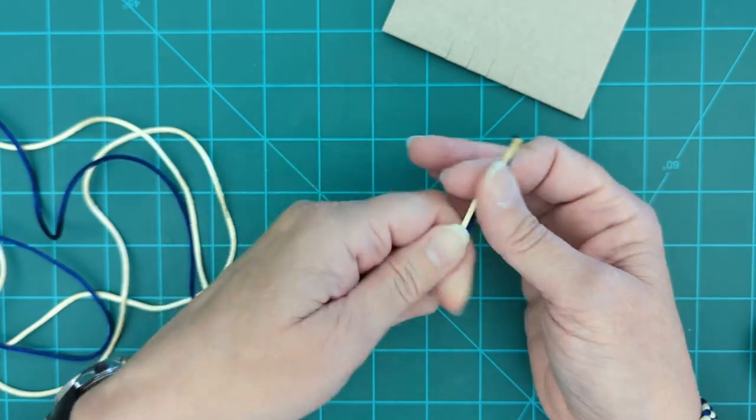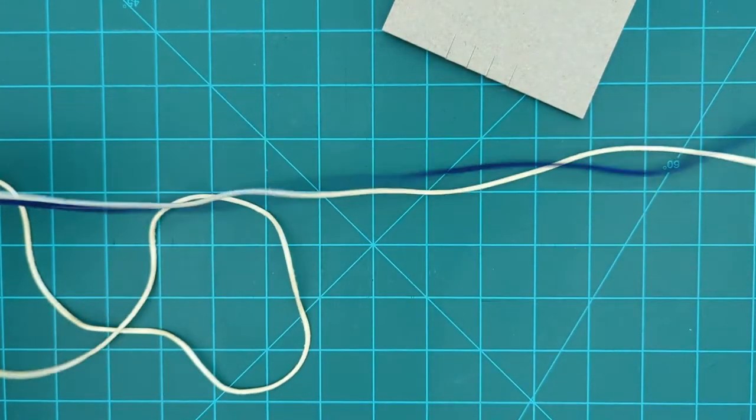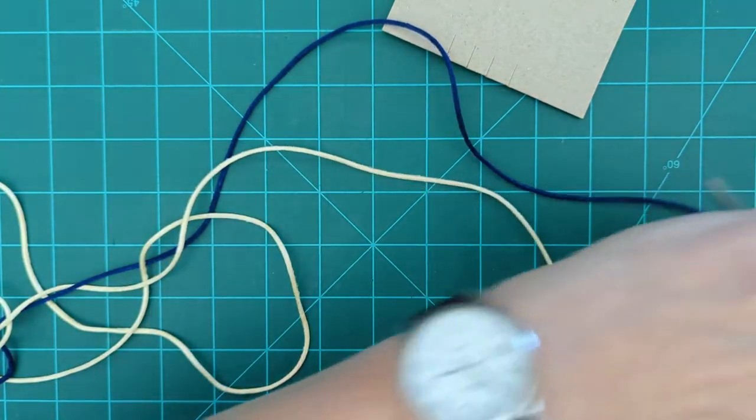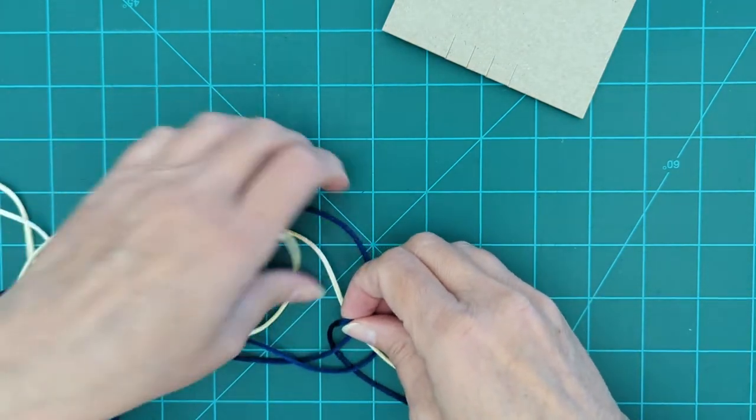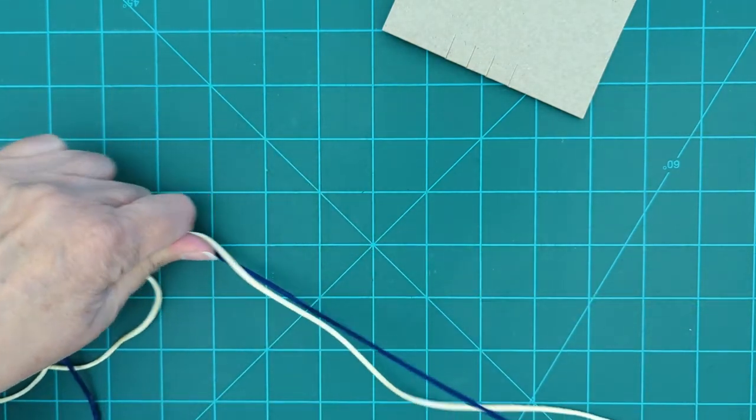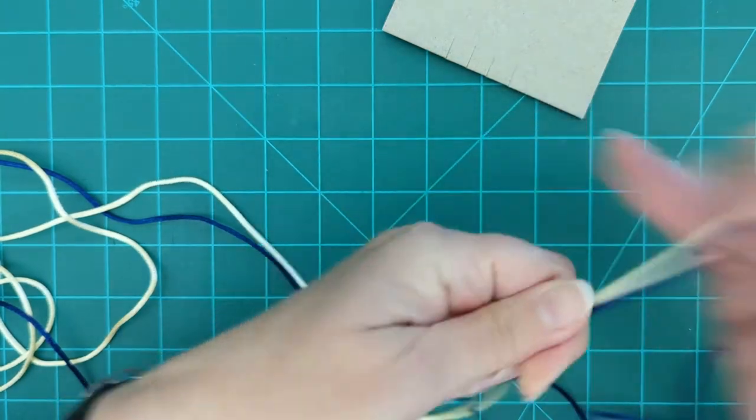So in order to prep this, what we're going to do is we're going to put the cords together. Put our cords together. Get them nice and straight. We're going to cut these in half and then cut them in half again.